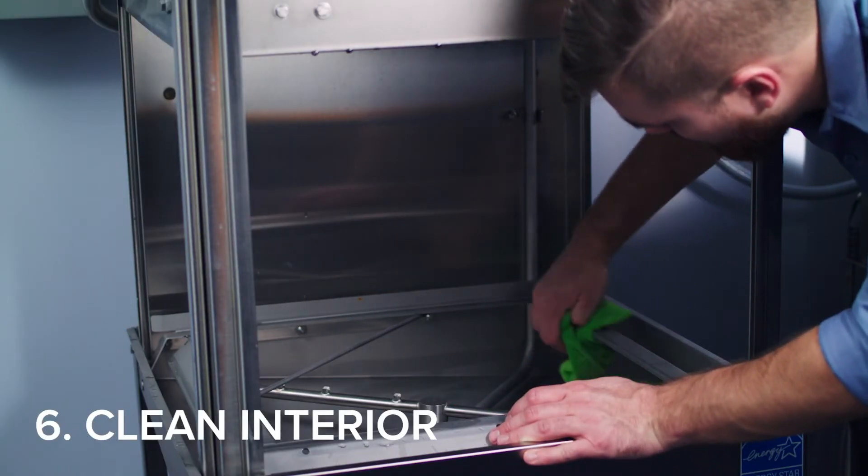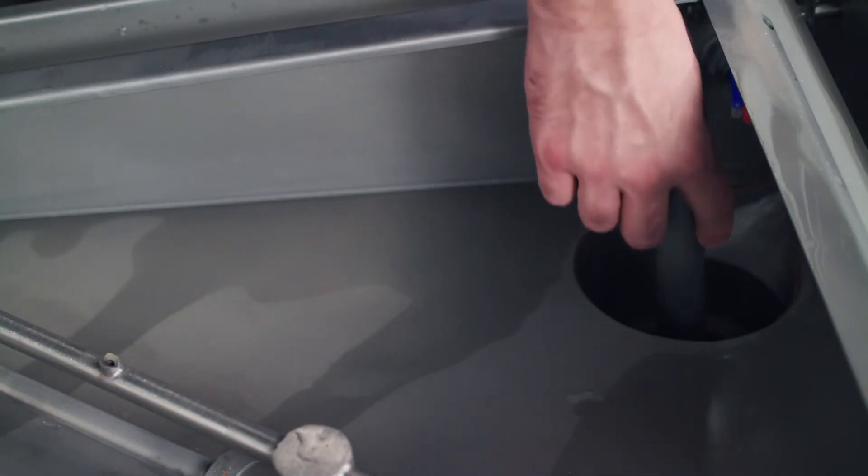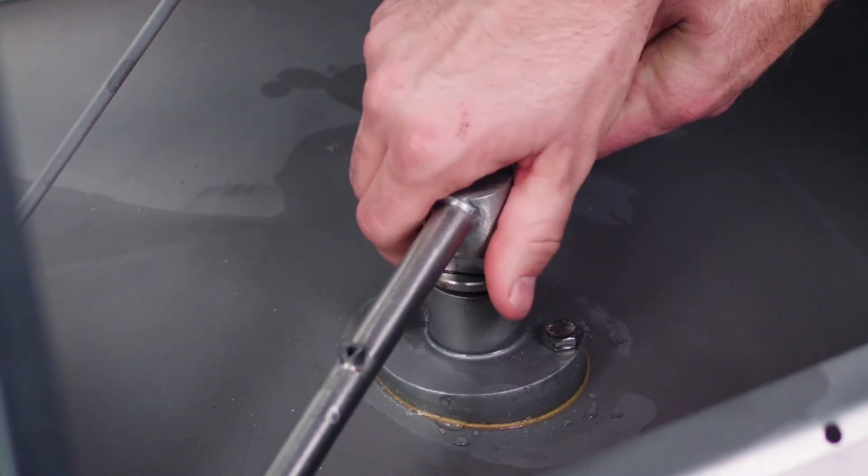Then spray or wipe down the interior of the machine. The sump strainer, scrap screen, drain stopper, and wash and rinse arms can now be replaced.